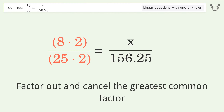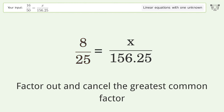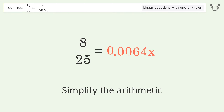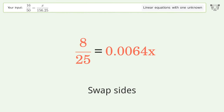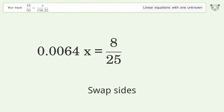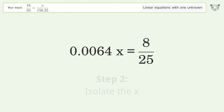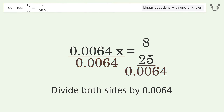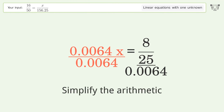Simplify the arithmetic, swap sides, isolate the x, divide both sides by 0.0064, then simplify the arithmetic.